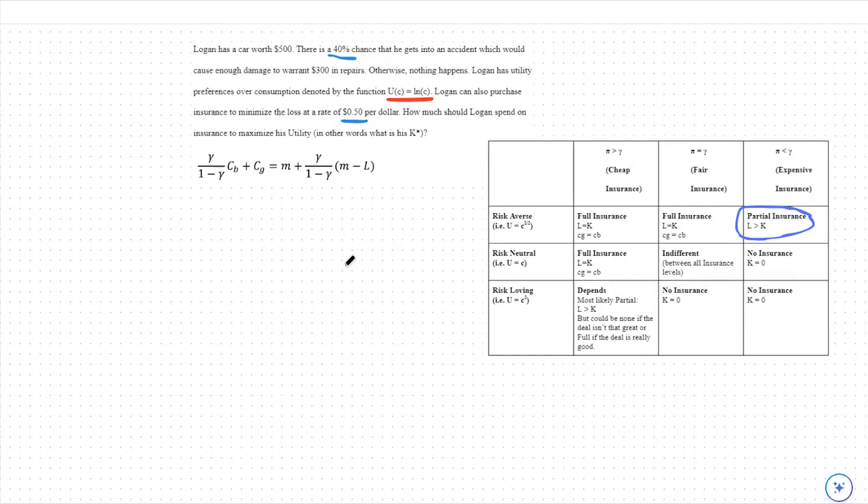For this question, we're going to start out by finding our expected utility function. We can do so by multiplying the probability of the bad state occurring times the utility in the bad state, and adding that to the probability of the good state occurring times the utility in the good state.